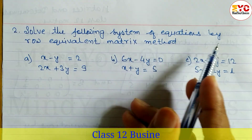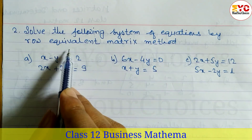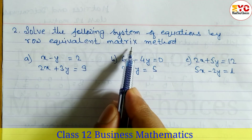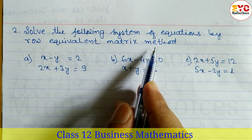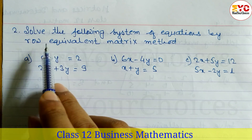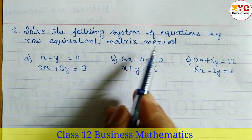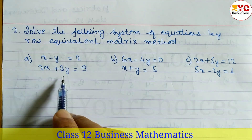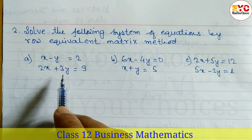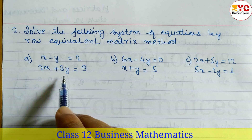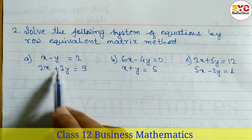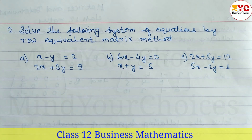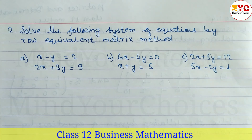Solve the following system of equations by the row-equivalent matrix method. We use the row-equivalent matrix method. Solve means we have to find out the values of x and y — these two variables.